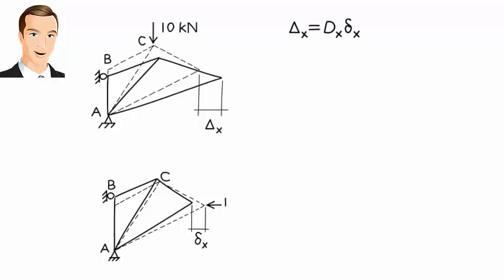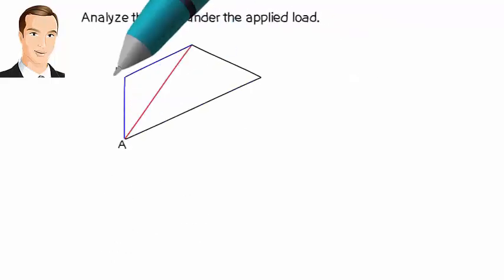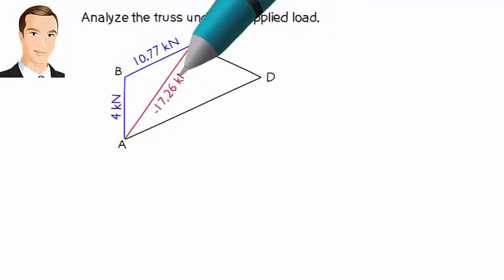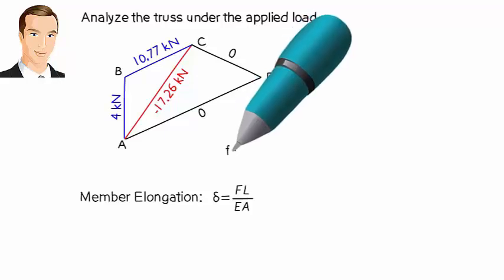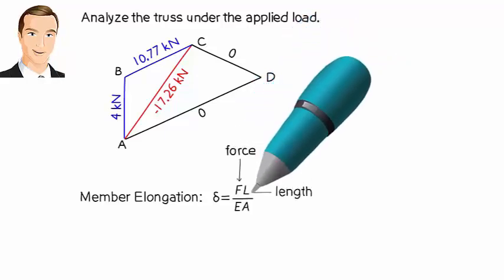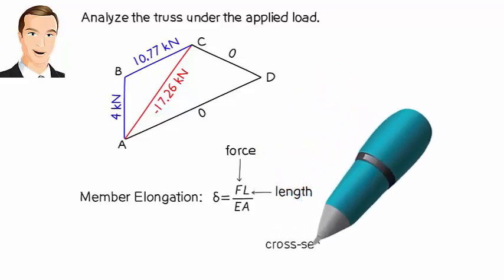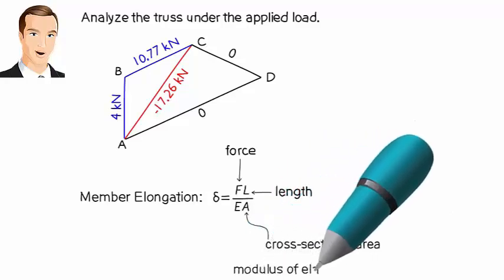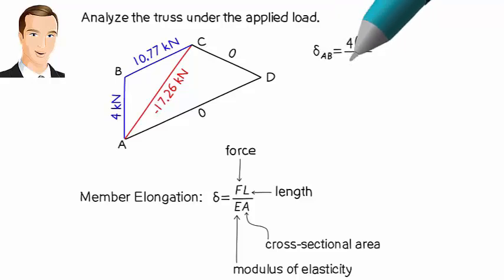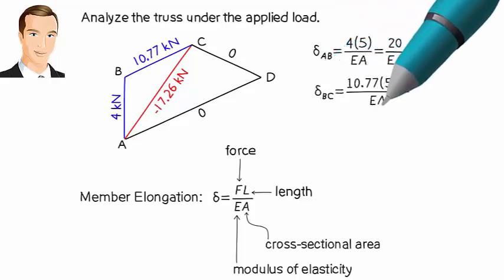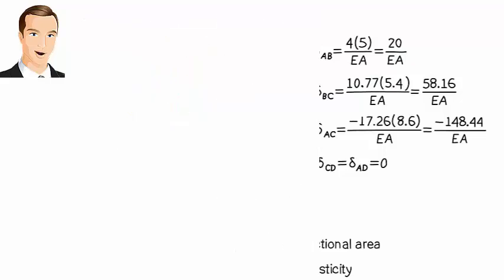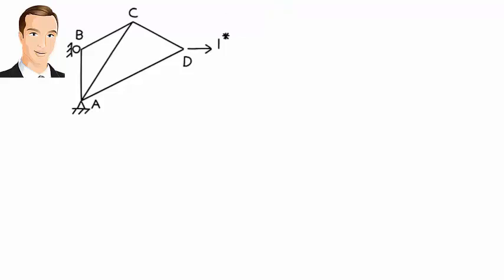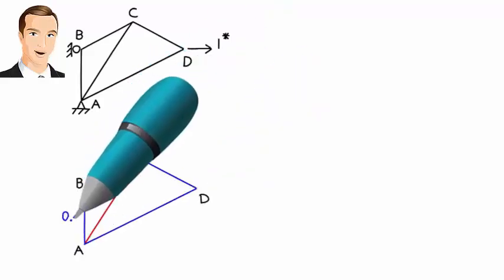See lecture essay 21 for an overview of the virtual work method. To calculate delta x, we first need to analyze the truss under the applied load. The analysis yields the following member forces. We then calculate each member elongation using the equation where F is the member force, L is the length of the member, A is the cross-sectional area of the member, and E is the member's modulus of elasticity. Here are the elongations. Now we place a virtual unit load in the direction of the target displacement and analyze the truss again. This time we get the following member forces.